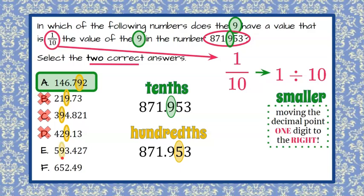In E, it is in the tens digit, so it is not. It is two digits to the left instead of two digits to the right.